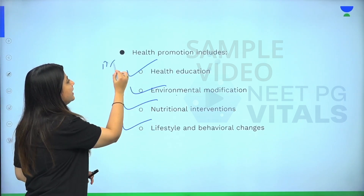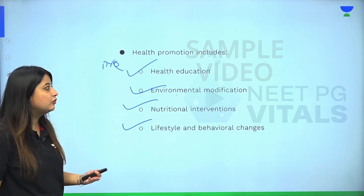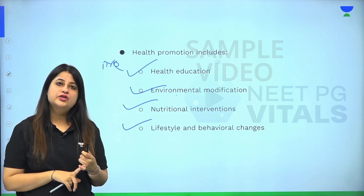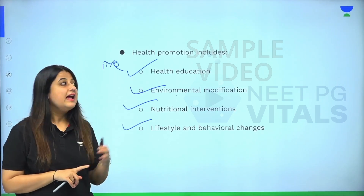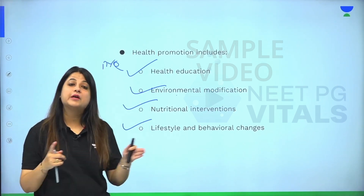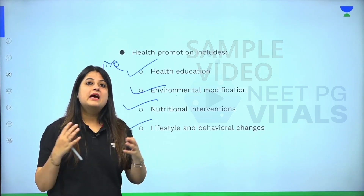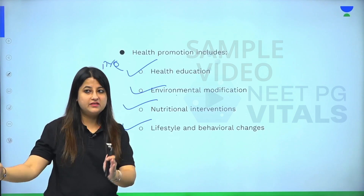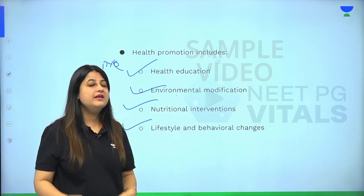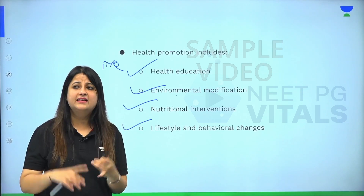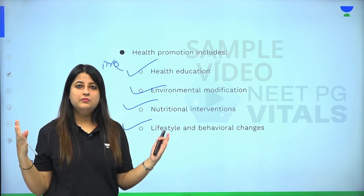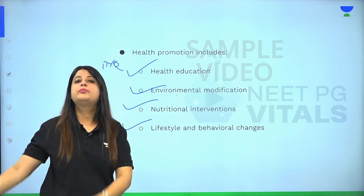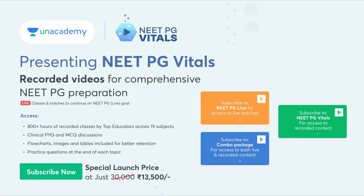This is a direct previous year question: health promotion examples include health education, environmental modification, nutritional interventions, and lifestyle and behavioral changes. Health promotion is a part of primary level of prevention — it promotes health in general, not specifically addressing one thing. For instance, ensuring safe water supply and sanitation protects us from a number of diseases, so it's a general measure to promote good health.